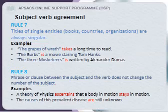Rule seven — titles of single entities such as books, countries, and organizations are always singular. For example: The Grapes of Wrath takes a long time to read; The Verbs is a movie starring Tom Hanks; The Three Musketeers written by Alexander Dumas.